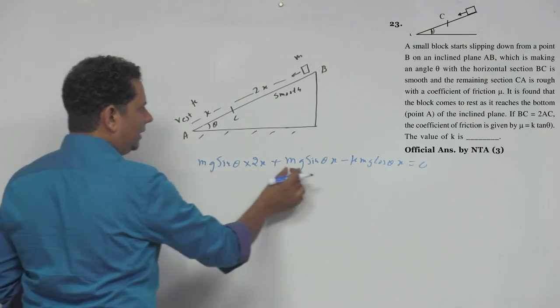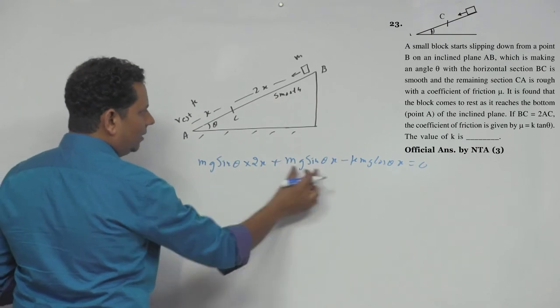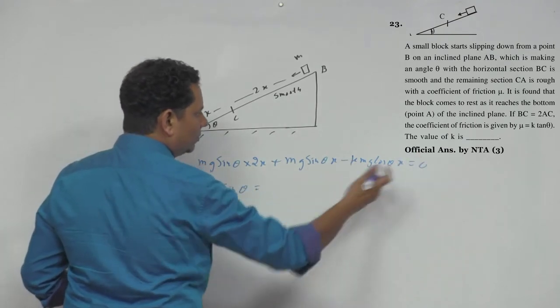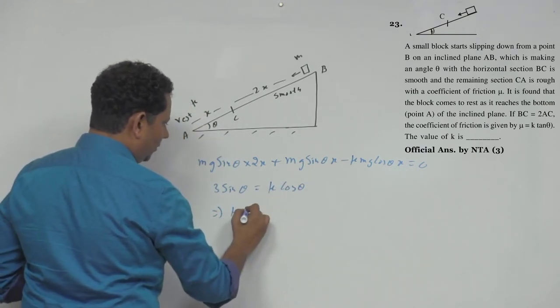So Mg cancels, x cancels. And this will be added. So this will be 3 sin theta equals mu cos theta.